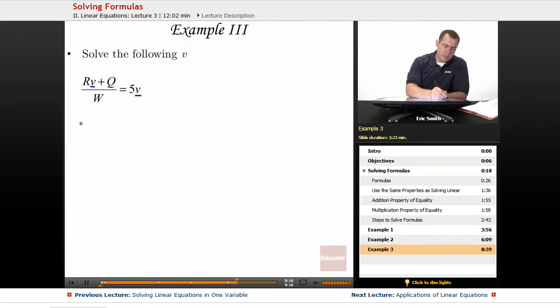Alright, so to take care of our fraction, I will multiply both sides of this one by w. It is my common denominator. So rv plus q all over w equals w times 5v.